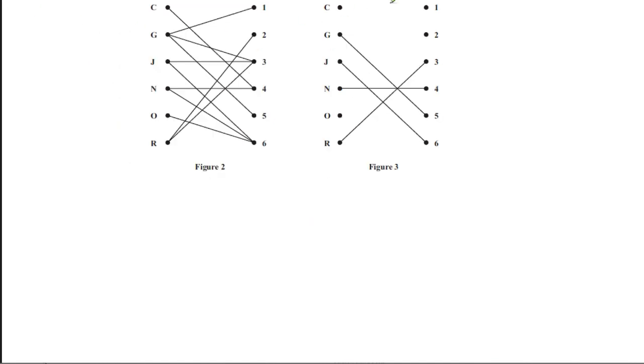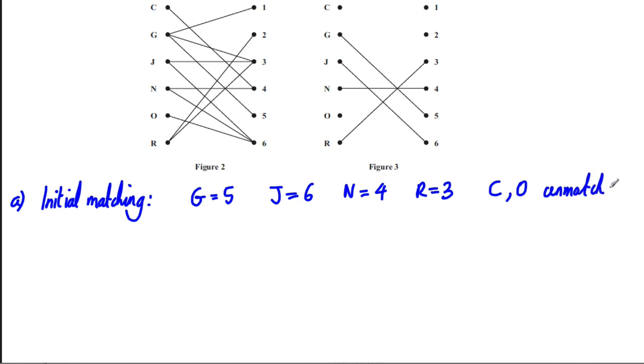Let's have a go at this question. Let's do it on a separate piece of paper. So part A, with these questions you always start out the same. You start off by listing your initial current matching, stating what's matched and what's unmatched. So our initial matching. Well, G is with 5, so G equals 5. And J is with 6, so J equals 6. N is with 4, so N equals 4. And R is with 3, so R equals 3. And C and O are unmatched. So you can just write C, O, unmatched. Always write this down.